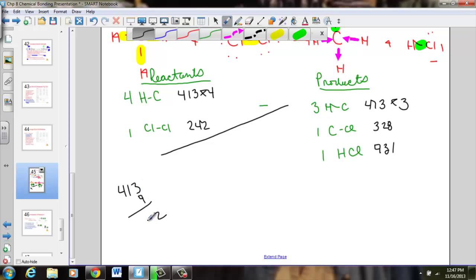What we have to do is sum up 413 times 4. We have 1652 coming from this. Plus the 242. Once I get the total amount of energy here, I want you to simply subtract the total energy here, reactants minus products, and find the delta H of reaction.